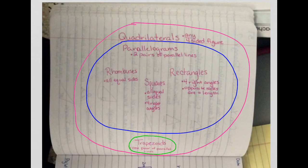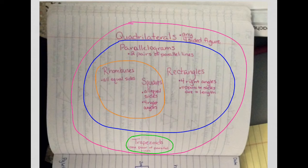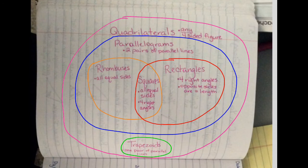Then you're going to put a circle around rhombuses and squares because both of these have all equal sides. Finally, you're going to put a circle around rectangles and squares because rectangles have four right angles and the opposite sides are equal length, and squares have four right angles and all of their sides are equal, so their opposite sides are equal length too.